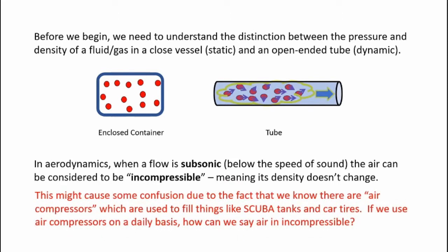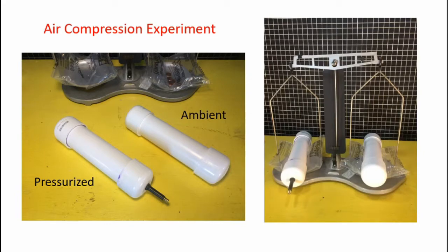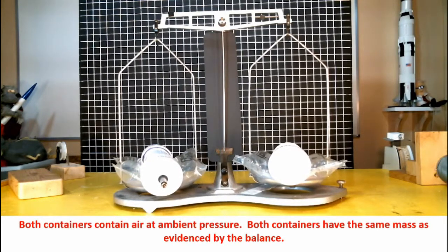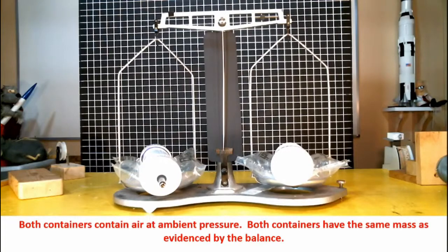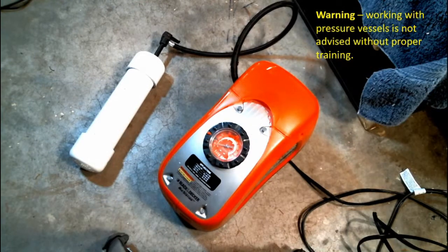This might cause some confusion because we know air compressors are used to fill things like scuba tanks and car tires. If we use air compressors daily, how can we say air is incompressible? Let's take a look at a simple experiment that shows how air density changes inside a sealed container as I increase the internal pressure. I have two identical containers with the same internal volume. I can pressurize one container and keep the other at ambient air pressure, then place them on a balance and compare their masses. First, I'll make sure both containers are unpressurized — the balance is nice and balanced. I'm going to use the air compressor to put 20 psi of pressure in the pressurized container.